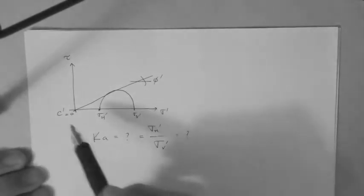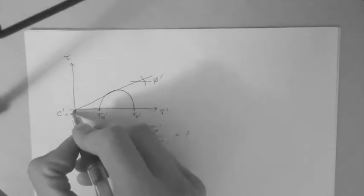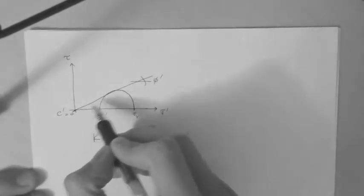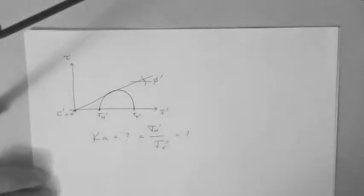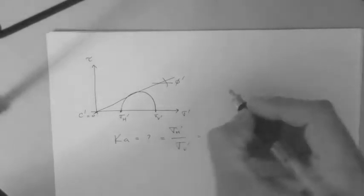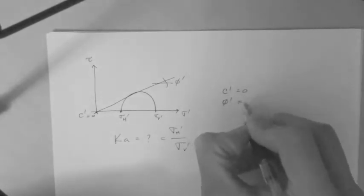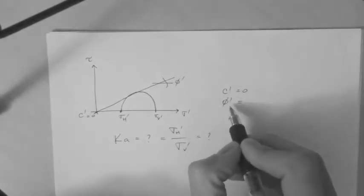So in the case where we have C' equal to 0, we have the line passing through the origin, and also touching the Mohr circle. So what do we know here? We know that C' is 0, we know the angle of friction.